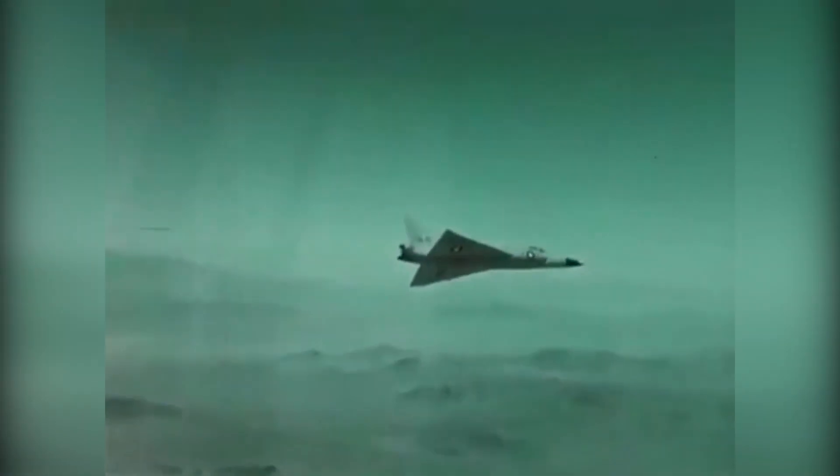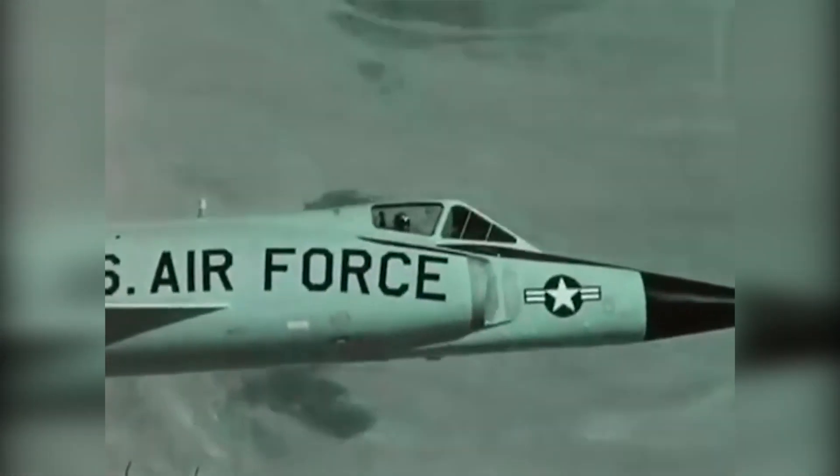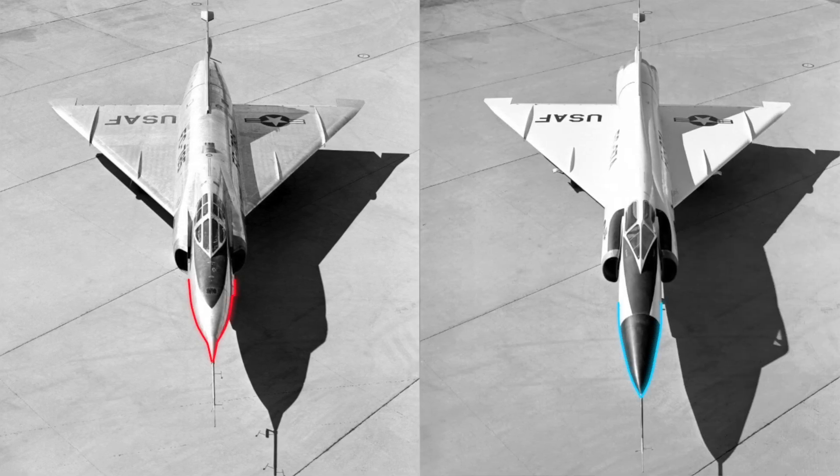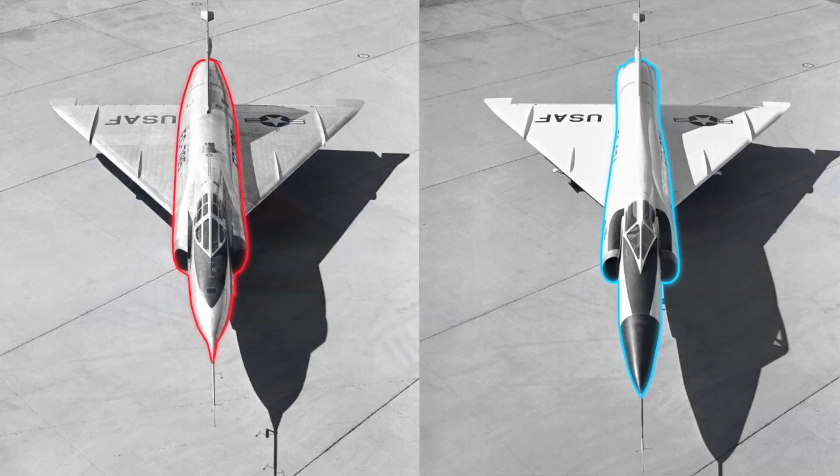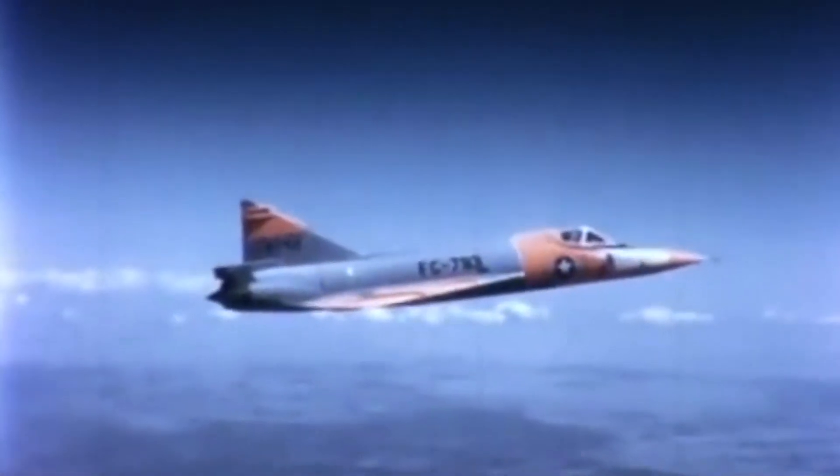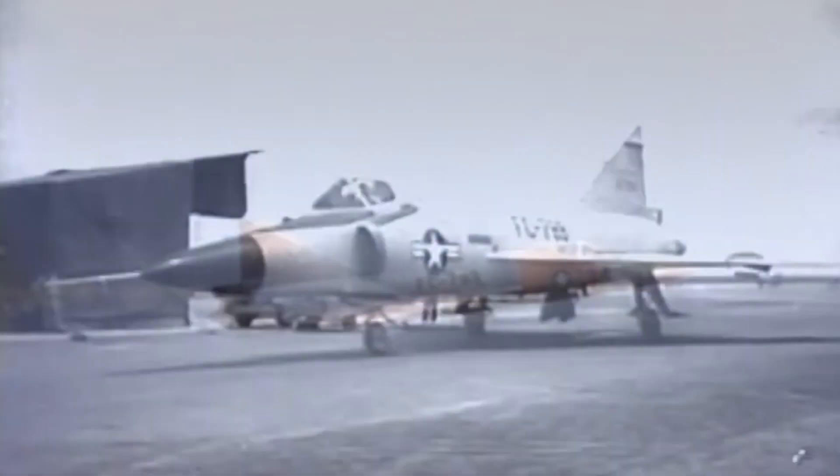To overcome this problem, the program of the F-102 went through a major redesign. In less than half a year, the new prototype, with a longer and narrower fuselage in the mid-section, broke the sound barrier and reached a top speed of Mach 1.22, exceeding all expectations and allowing it to enter production.